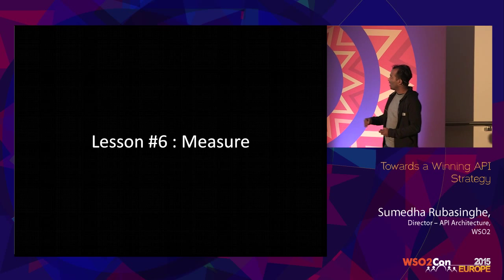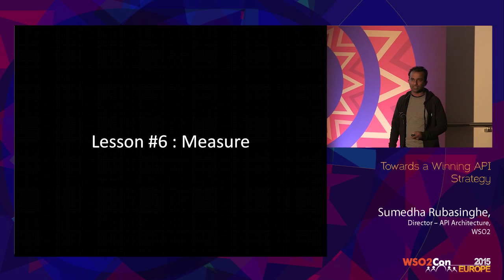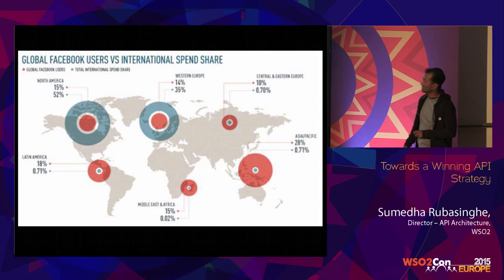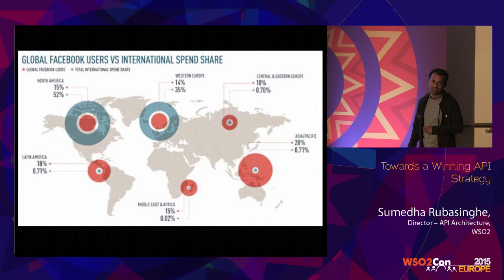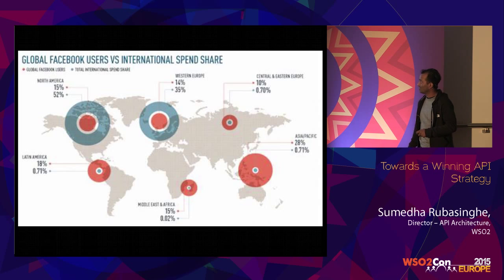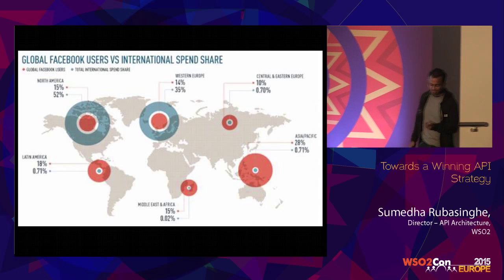You should keep on measuring how APIs are being used so that you know whether they are actually meeting the objectives. It could even be getting into statistics like global Facebook API users versus international spend share — some countries who are spending more are also spending a lot of time within Facebook, and some countries who are not spending that much are wasting — maybe spending a lot of time on Facebook. Different statistics.